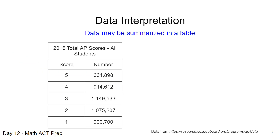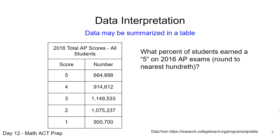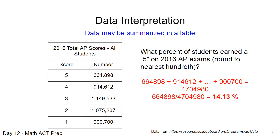Sometimes data is summarized in a table. In this particular table, we're looking at total AP scores for a particular year for all students, with different scoring values and how many students scored at each level. A typical question might be: what percent of students earned a 5 on the 2016 AP exams, rounded to the nearest hundredth? First, we find the total number of students by adding all the numbers in the number column. Then we look at the row for a score of 5, which is 664,898, divide that by the total, and get 14.13%.